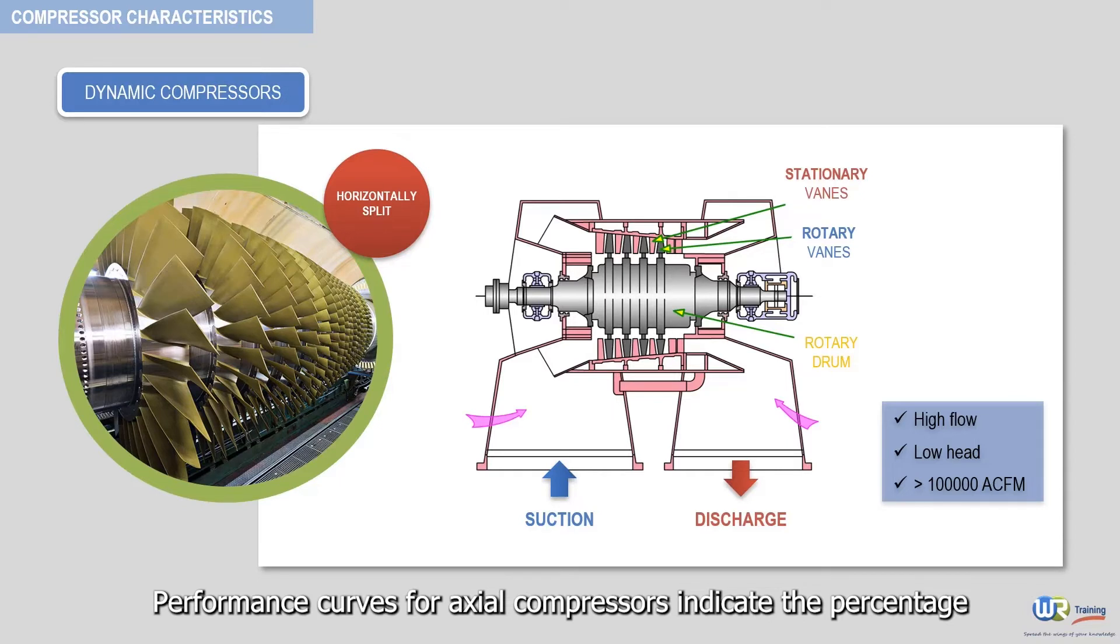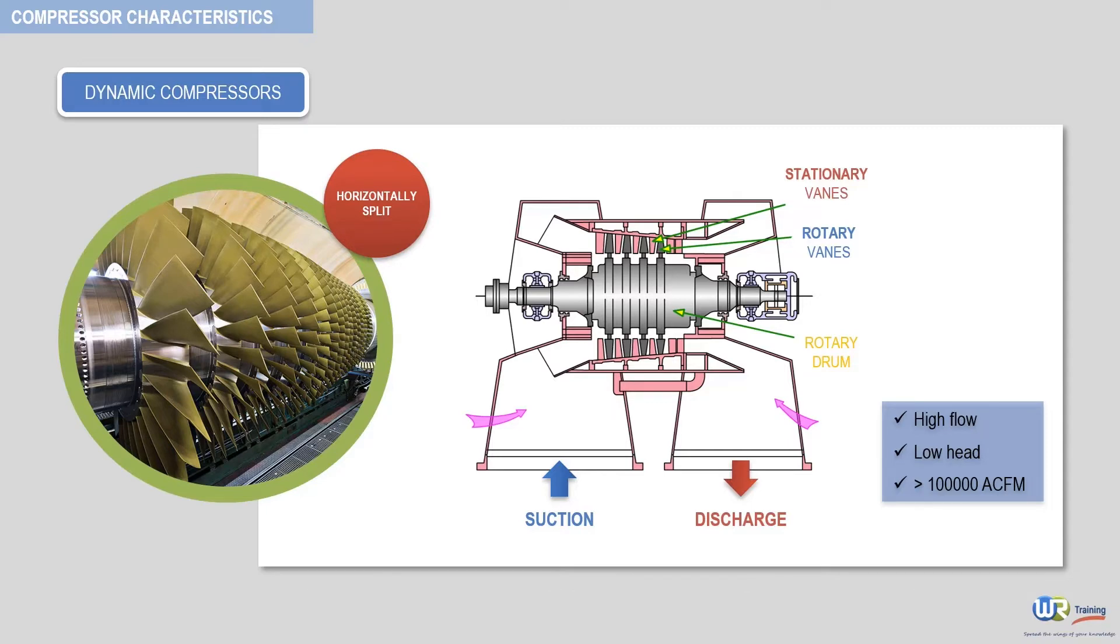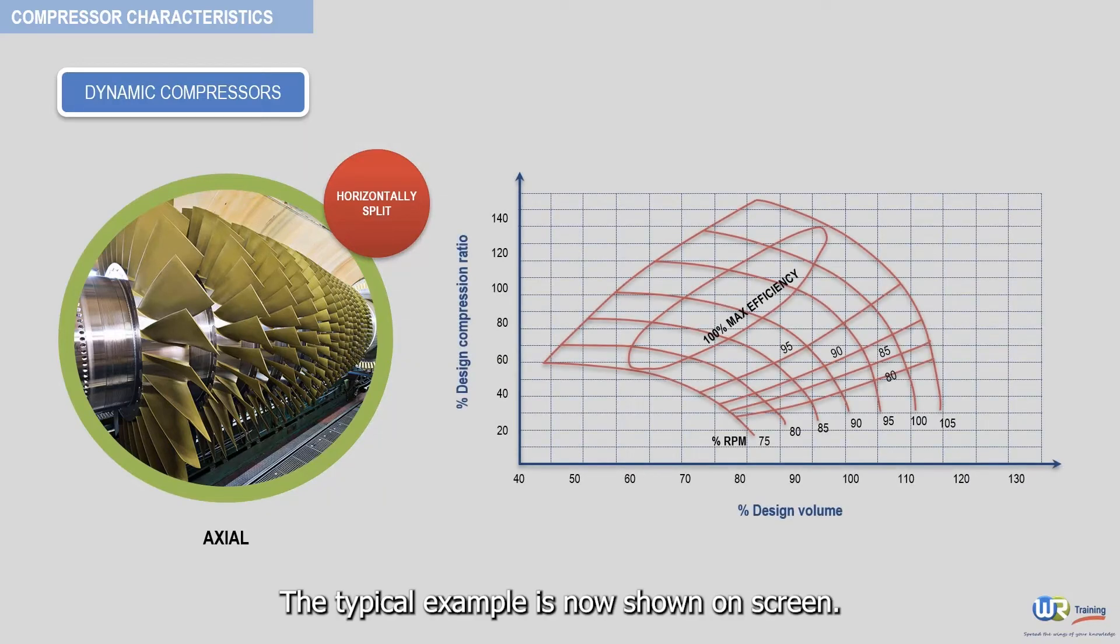Performance curves for axial compressors indicate the percentage compression ratio as a function of the percentage volume flow. A typical example is now shown on screen.